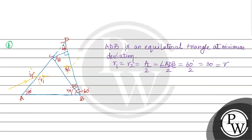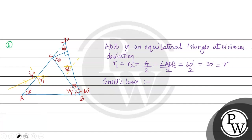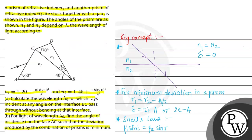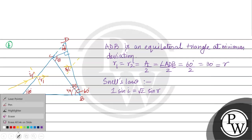This angle is taken as R, which equals 30°. From Snell's law at the surface, we write: N1 times sin(i) equals the refractive index of the second medium. The refractive index is taken as root 2. So: 1 times sin(i) equals root 2 times sin(r).